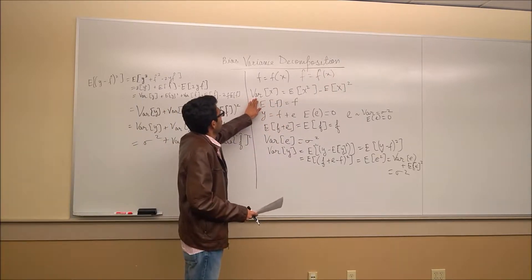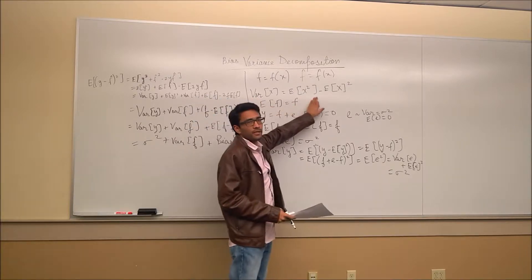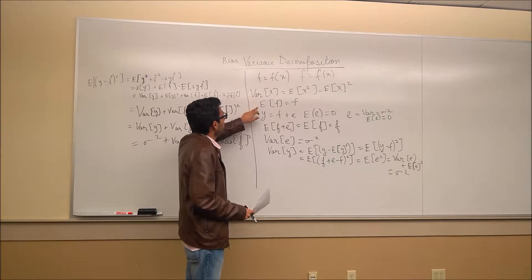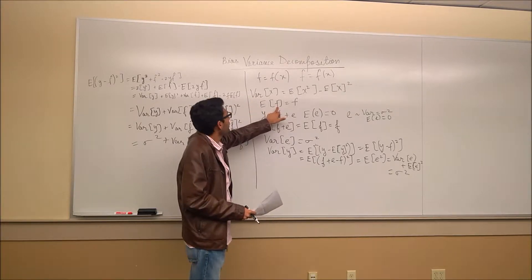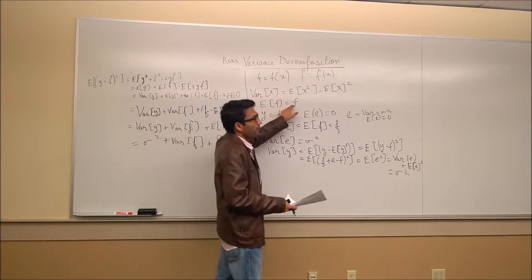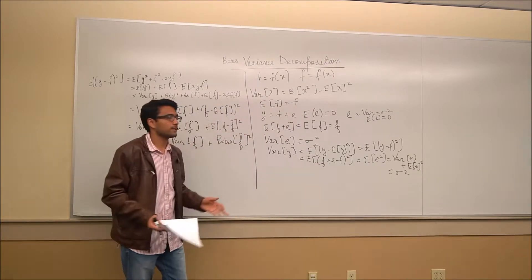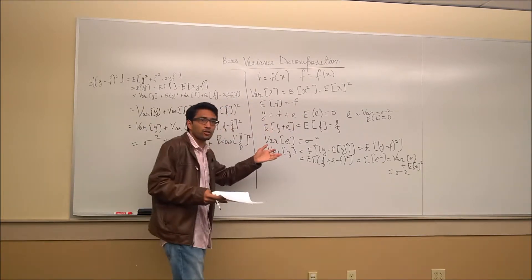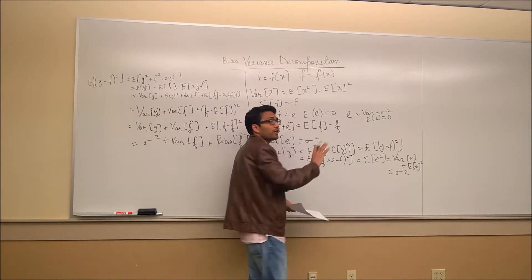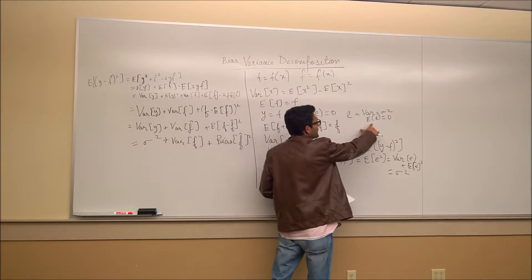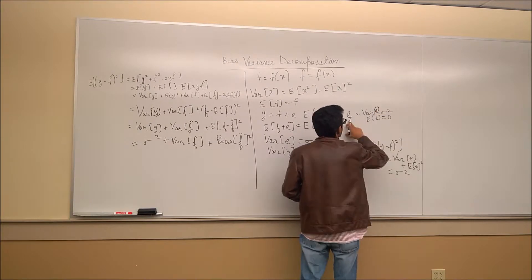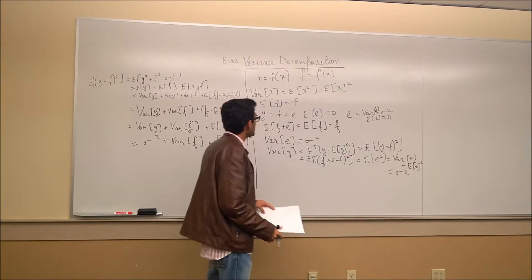There is a relationship between variance and expectation that is pretty common — we are not going to look at the proof, it's not very difficult. f is deterministic; we are assuming it is a fixed function, so the expectation of f is just f, because the expectation of a constant is a constant. We assume that y, the actual output, equals f plus some error e, and we assume that the expectation of this error is 0. The variance of this error we will call sigma squared.